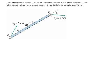End A of the 600mm link has a velocity of 5m per second in the direction shown. At the same instant, end B has a velocity whose magnitude is 6m per second as indicated. So we're asked to find the angular velocity of the link.